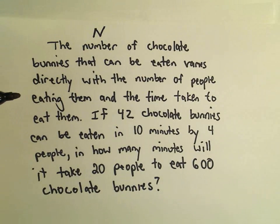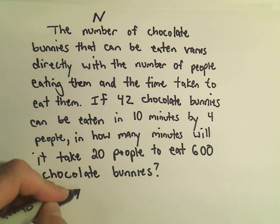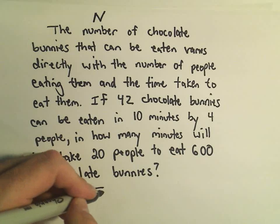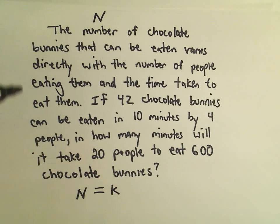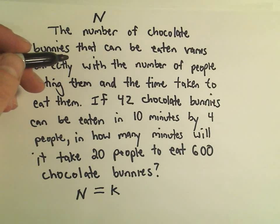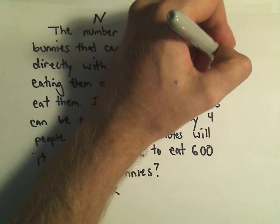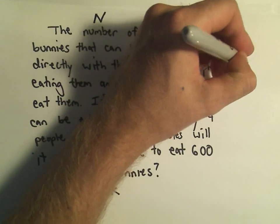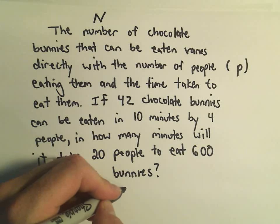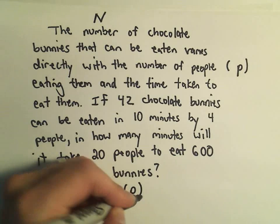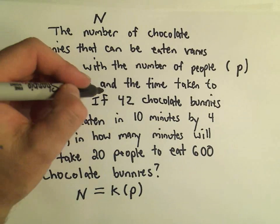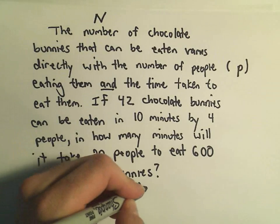So it says the number varies directly. So I'm going to write equals K. It says it varies directly with the number of people. So maybe I'll say the number of people. I'll abbreviate that as a P for the number of people. So varies directly with the number of people and you can think about 'and' as being multiplication.